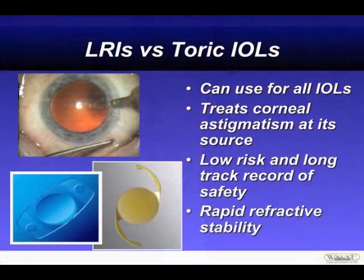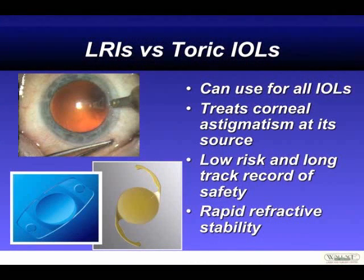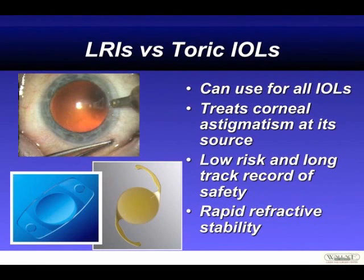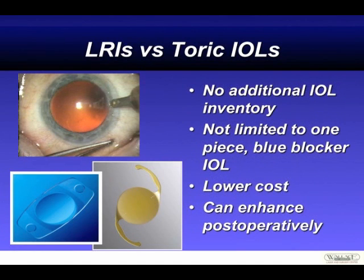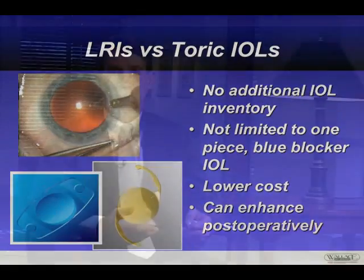But there are advantages that LRIs have over toric IOLs. Probably the most important is that we can use LRIs for all IOLs, including presbyopic IOLs. It treats astigmatism at its source at the corneal plane. There's a low risk and long track record of safety, and a rapid refractive stability that's incredibly good even one day out. There's no additional IOL inventory, lower cost than toric IOLs, and we can enhance astigmatism with LRIs postoperatively — which is not true with toric IOLs. So even if a surgeon is using toric IOLs and wants to touch up astigmatism with an unhappy patient after surgery, this is a great option.